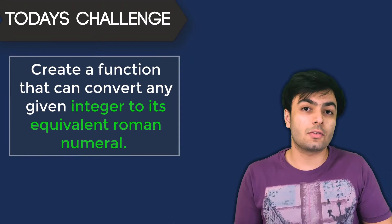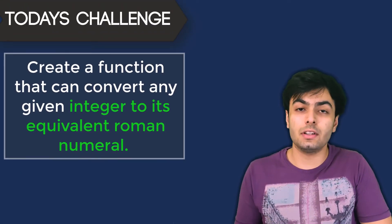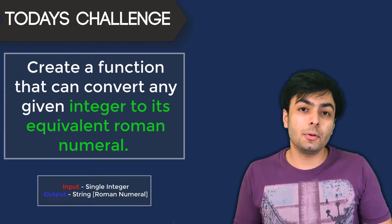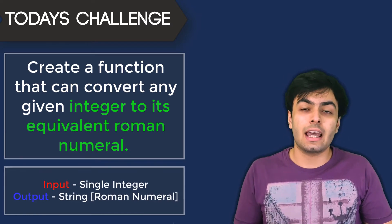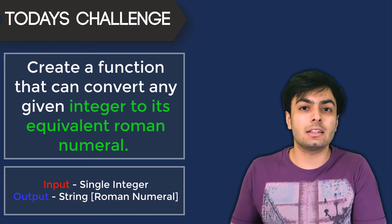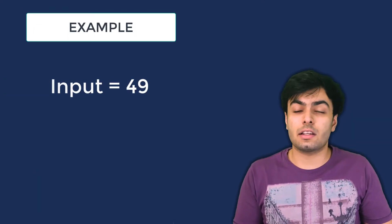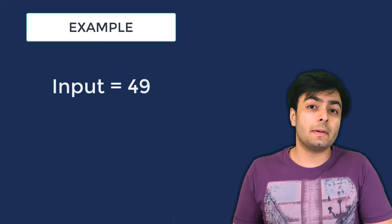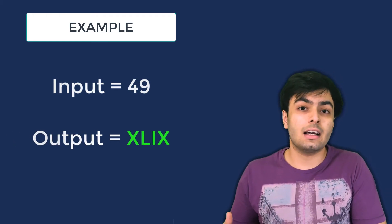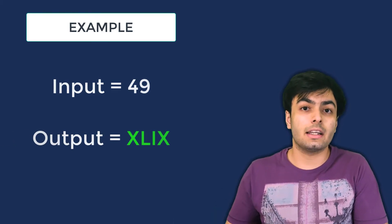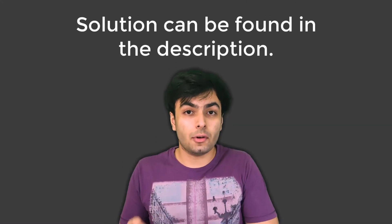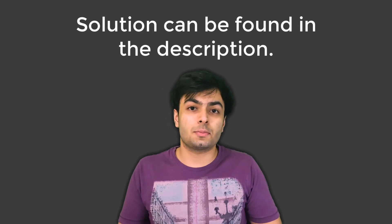Today's challenge is to create a function that can convert any number into its equivalent Roman numeral. The input must be a single integer and the output must be a string containing the Roman numeral. For example, if the function was fed the number 49, then we should expect to see an output of XLIX, which is 49 in Roman numerals. At this point, I would encourage you to pause the video and try solving this problem yourself.